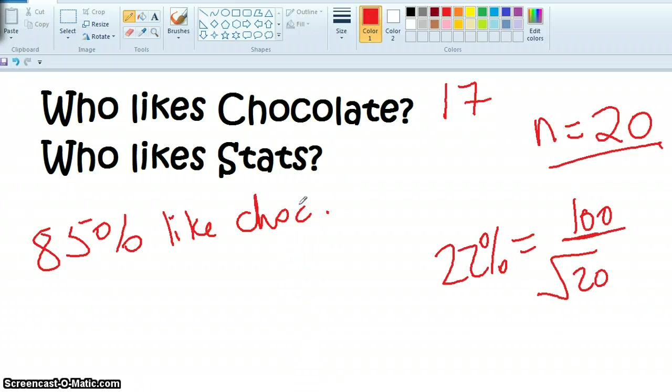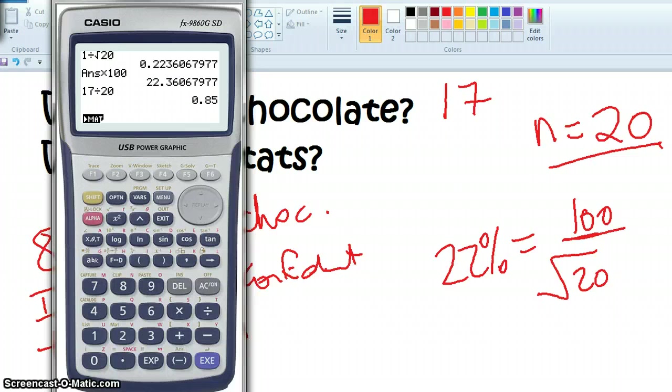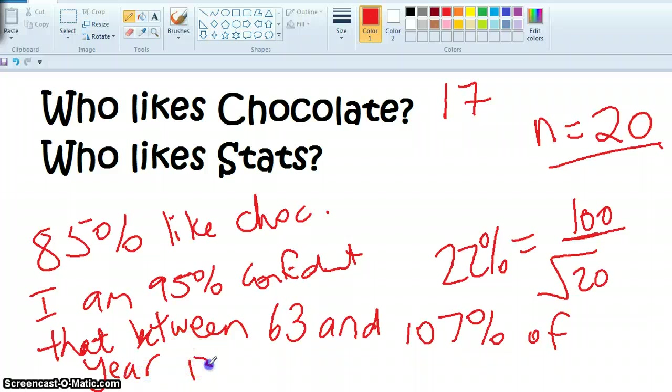Okay, what is my confidence interval? I am 95% confident that between... Come on, who's doing it? How many? 100, over half? 63. 85 minus 22, 63. And 107. Is that to get the percentage? How many, what does that mean? Okay, I will talk to that in a minute. Yeah, 13 students like chocolate.